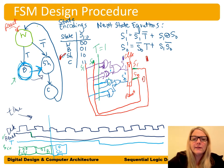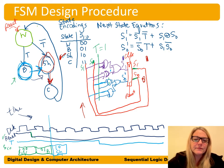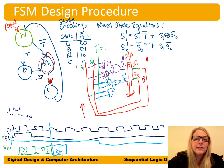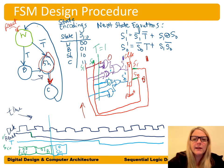We keep cycling: from 11 (class state), the circuit calculates the next state back to 00 (W state), and so on. Our circuit is now performing this finite state machine — it is our circuit implementation of the FSM. We could keep verifying and expect the next clock edge to bring us back to W (00).